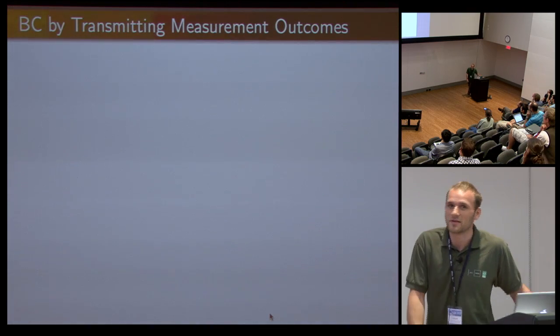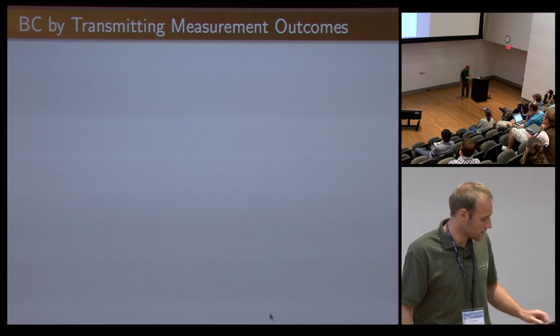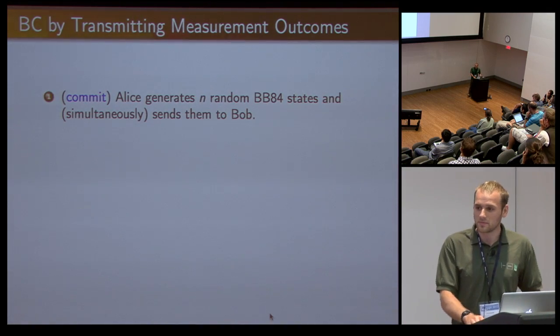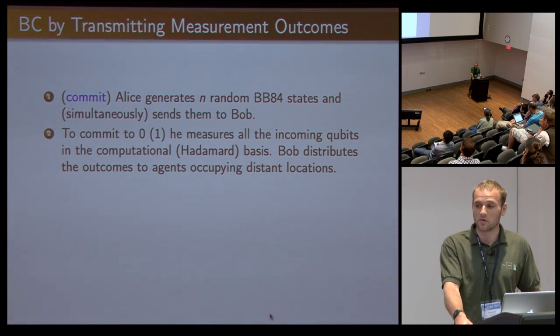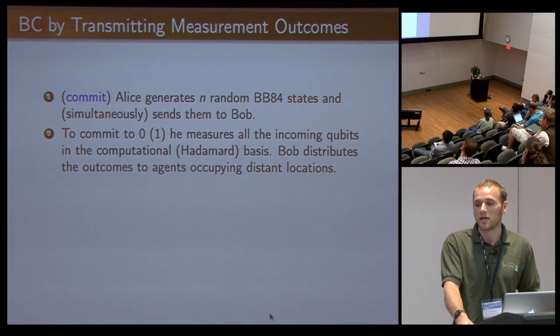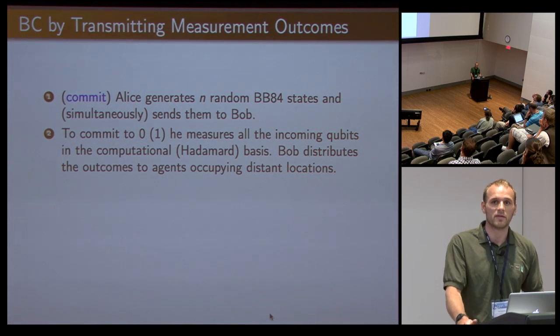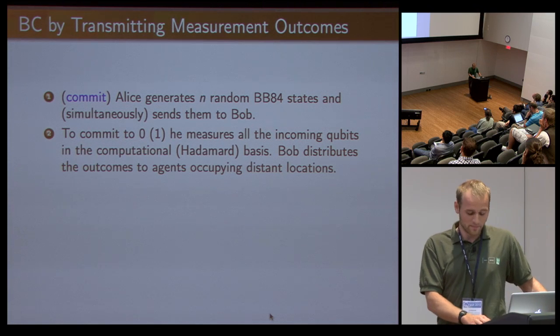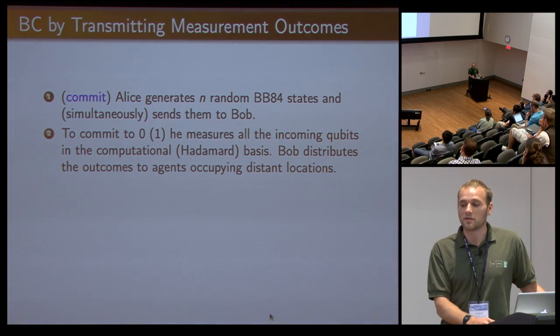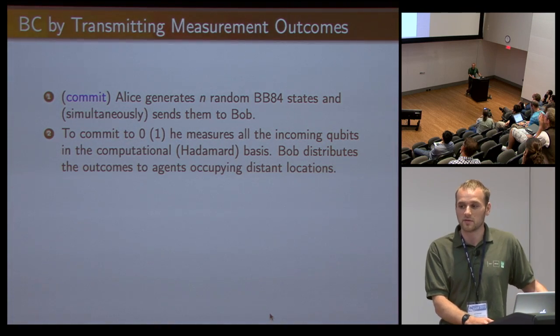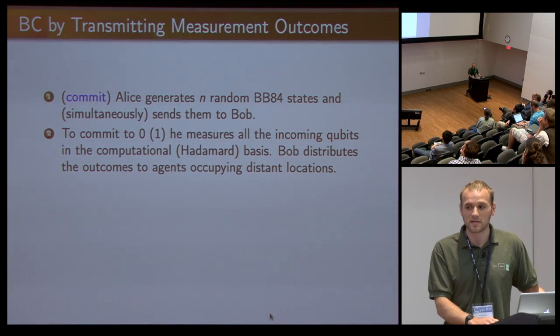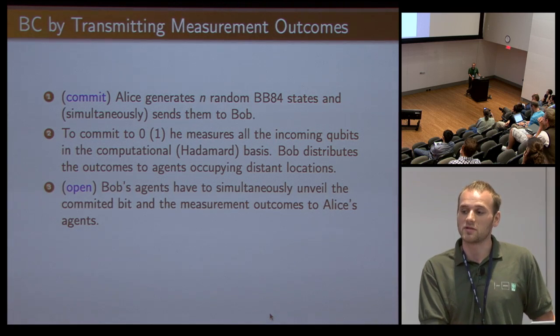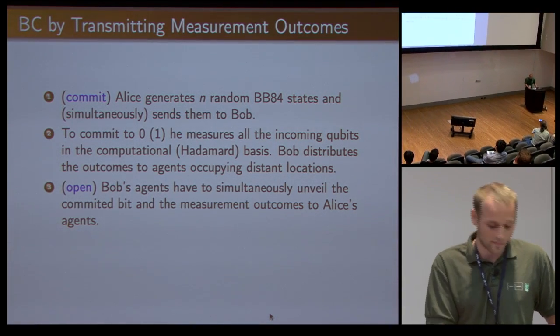I'll tell you about the transmitting measurement outcomes protocol. The protocol is actually very simple. In the commit phase, Alice generates random BB84 states and sends them to Bob. Bob now commits, and his commitment is essentially a measurement. If he wants to commit to a zero, he measures everything in a computational basis. If he wants to commit to a one, he measures everything in the Hadamard basis. He writes down the classical measurement outcomes and distributes them to his agents far away somewhere.